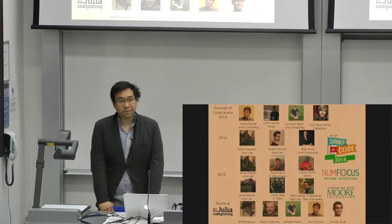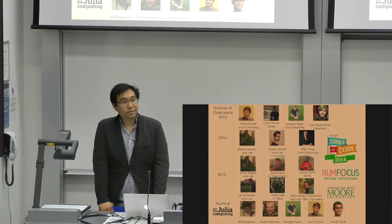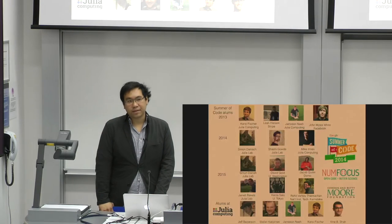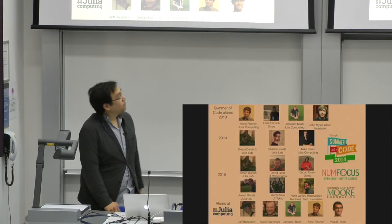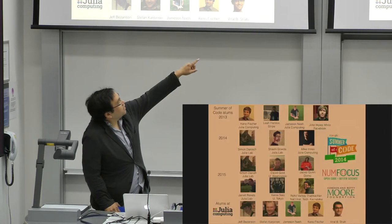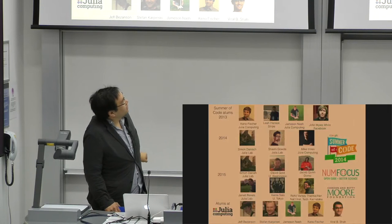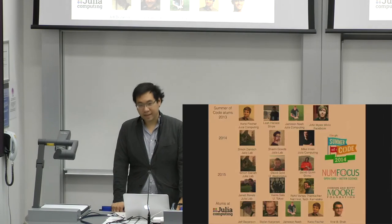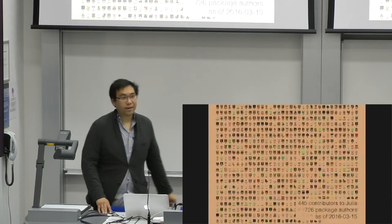There are also people who have participated in open source developments. One of the big programs that we participated in is Google Summer of Code. We've been fairly successful at keeping some of these Google Summer of Code people around to keep working on Julia. In particular, we see Keno, Simon, Shashi, Mike Innes, and Jared, and a bunch of other people. A lot of them ended up at Julia computing or in the lab somehow, or at least active in the space.